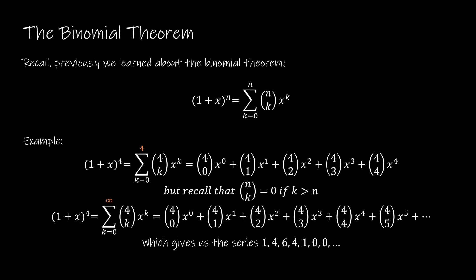We have worked with the binomial theorem in the past, and just as a reminder, when we have (1 + x)^n, that tells us that we're going to take the summation as k goes from 0 to n of n choose k and then x to the k. This is an easier example because the first value is 1, but let's take a look at what that would do.